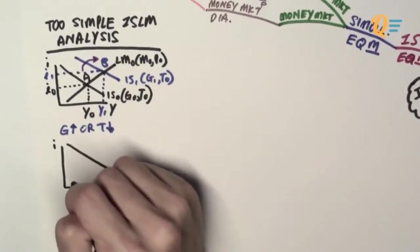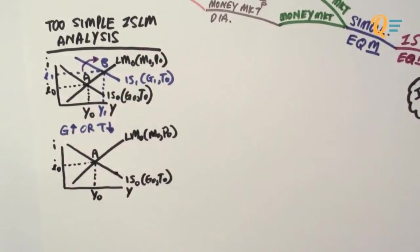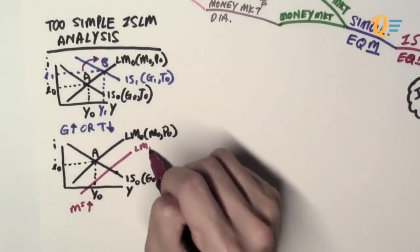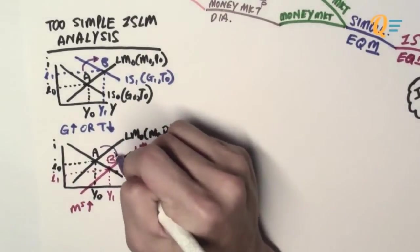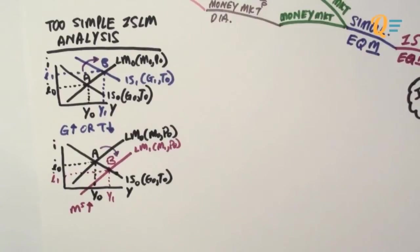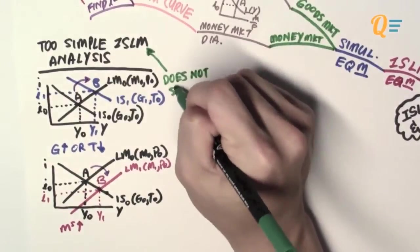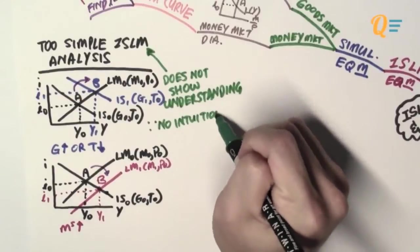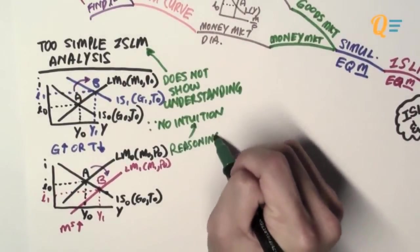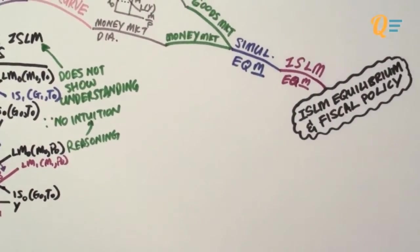Another example: starting from an initial equilibrium, if there is a monetary expansion where money supply increases, this causes the LM curve to shift down, resulting in a higher level of income and lower interest rates, so the economy moves from point A to point B — and that's the end of the analysis. Well, this is too simple. It does not show much understanding of the topic or the mechanics of how the macroeconomy works, because there is no intuition — meaning no economic reasoning behind the movement from A to B.